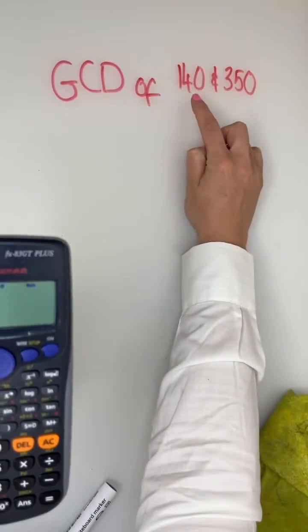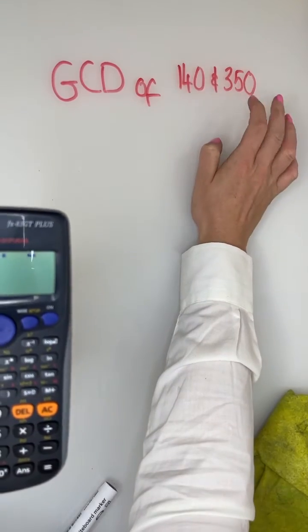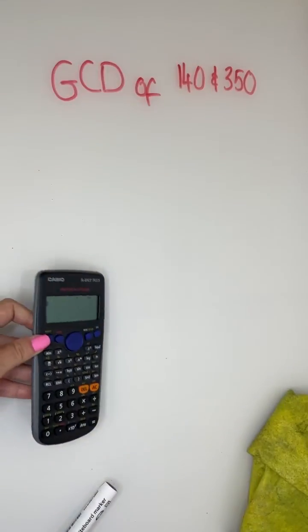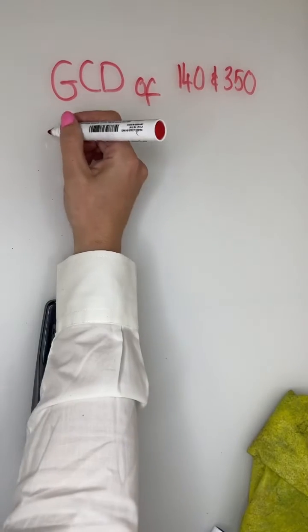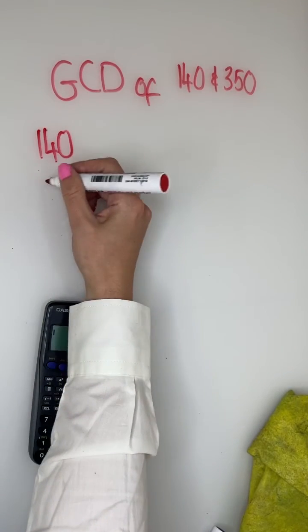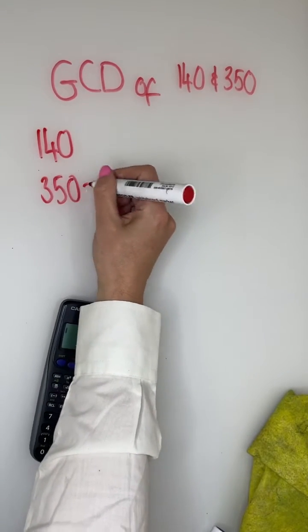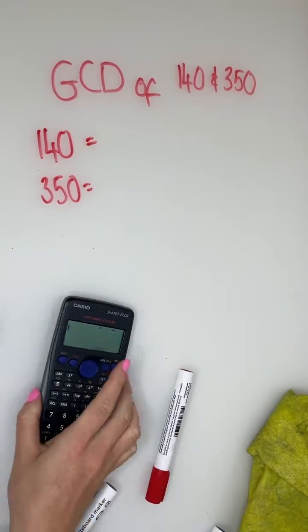Right, so first we're going to find the prime factors of 140 and 350 using the calculator. Even though you're using your calculator, make sure you write down all your working out, just in case you make a mistake. Anyway, you should get some method marks.